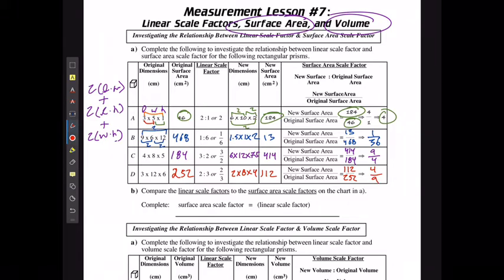If I compare these once again, the 2 to the 4 is just going to look like 2 squared. 1 over 6 to 1 over 36 is gonna be 1 over 6 squared. 3 over 2 to 9 over 4 is 3 over 2 squared. And 2 over 3 to 4 over 9 is 2 over 3 squared. Which means that the surface area is gonna be the same as just a two-dimensional area. It's going to be the linear scale factor squared or multiplied by itself.